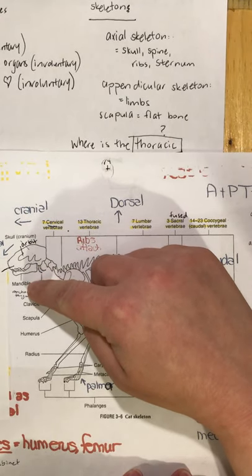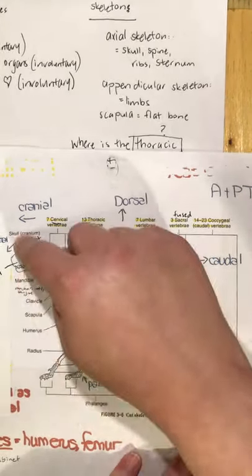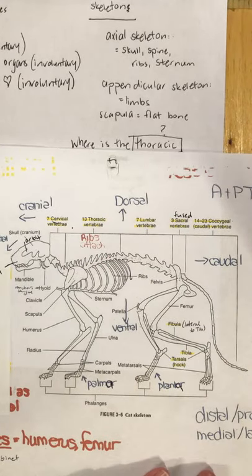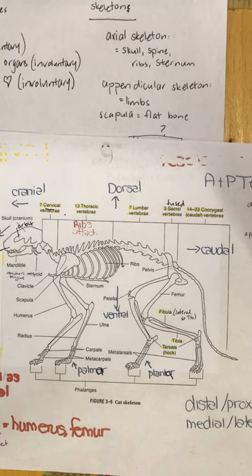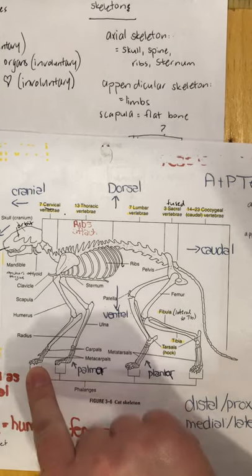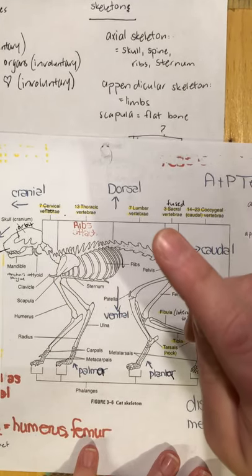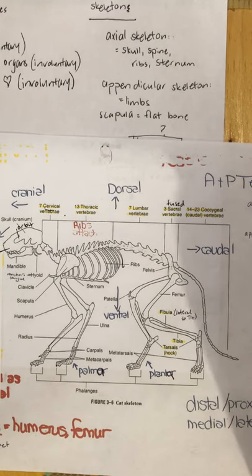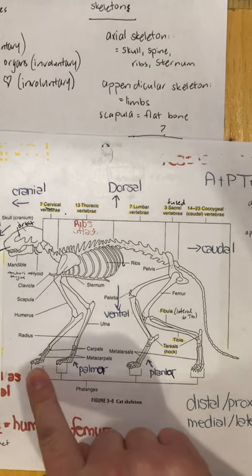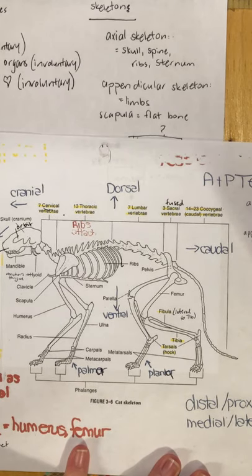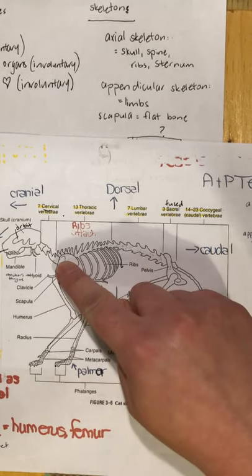Another dorsal-ventral example: if I asked where is the mandible on the skull — it's ventral, towards the belly, it's down. On a limb, we use distal and proximal. Distal is further from the point of attachment; proximal is nearer. The most distal bone in the forelimb would be the phalanges. The most proximal bone in the forelimb would be the scapula — it's closest to the point of attachment.